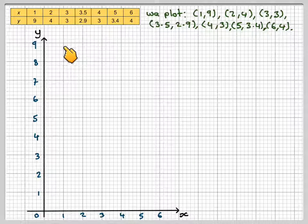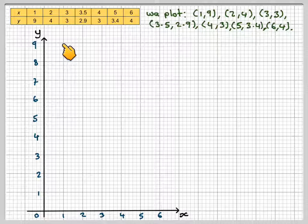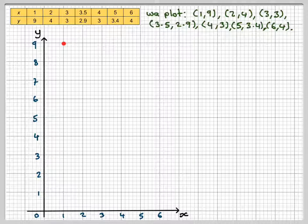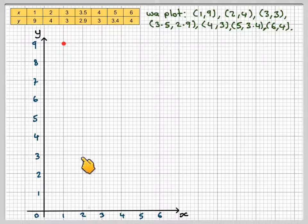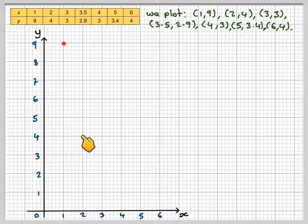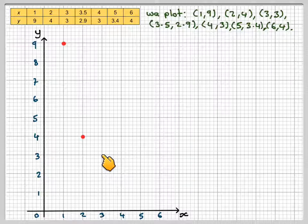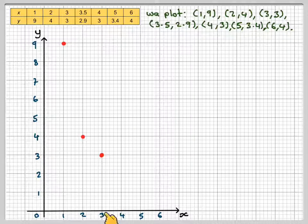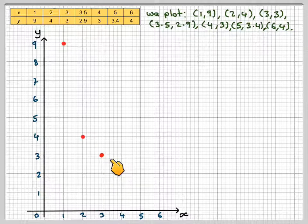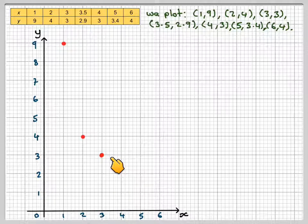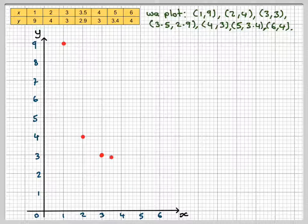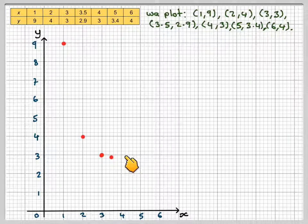We want (1,9), which is that point there. (2,4), which is that point there. (3,3), which is that point there. Now we need 3.5, so 3.5 will be halfway between, and then we need to go just slightly lower. In the middle of that little square there will be 2.9. Then (4,3).